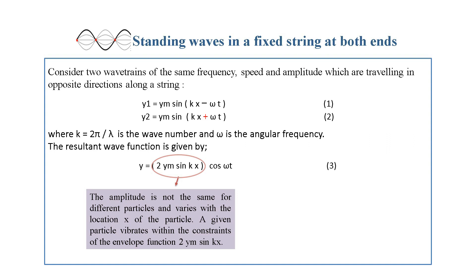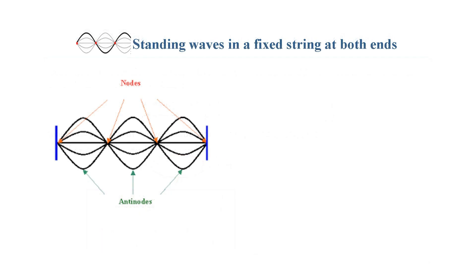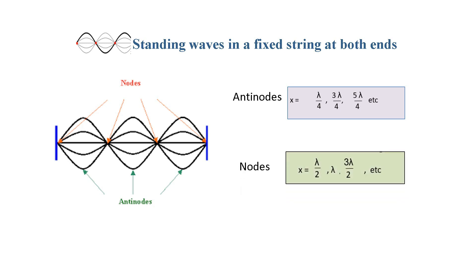The amplitude is not the same for different particles and varies with the location x of the particle. A given particle vibrates within the constraints of the envelope function 2ym sin(kx). All particles vibrate with the same frequency due to the factor cosine(ωt) in the equation. The position of the antinodes are λ/4, 3λ/4, 5λ/4, etc., while the position of the nodes are λ/2, λ, 3λ/2, and so on.